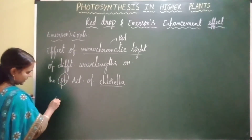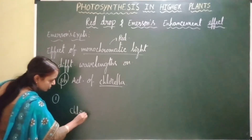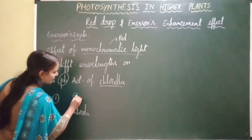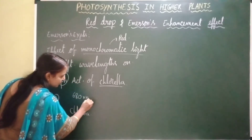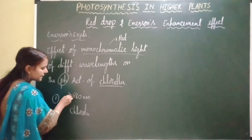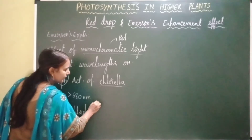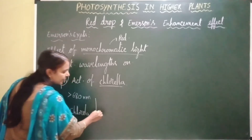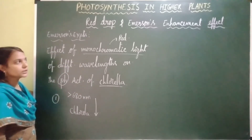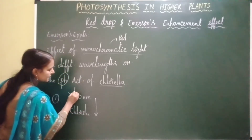In his first experiment, he exposed Chlorella to red light which is above 680 nanometers wavelength. He then observed that there is a sharp decrease in the rate of photosynthesis, and he called this phenomenon — that sharp decrease in the rate of photosynthesis — as red drop.